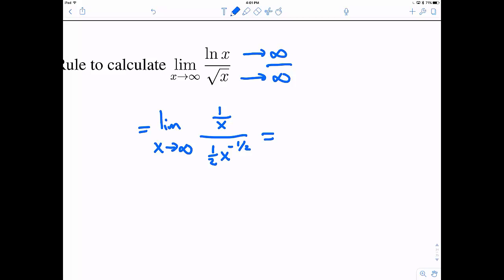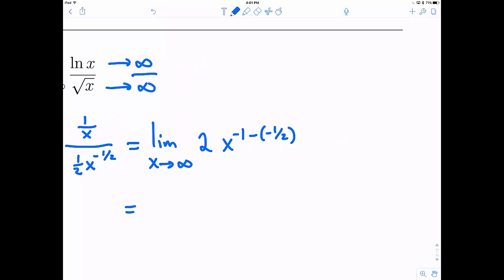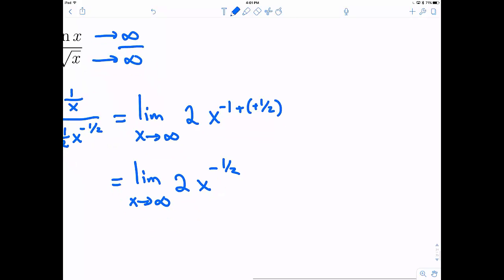Now, we have algebra time. So we need to simplify this. We know that dividing by 1 half is going to be the same thing as multiplying by 2. And then with properties of exponents, this is going to be x to the negative 1, and then minus, because it's in the denominator, a negative 1 half. So really, we could think about this, instead of minus a negative, this is the same thing as adding. So negative 1 plus 1 half is going to be x to the negative 1 half.